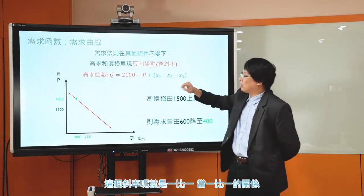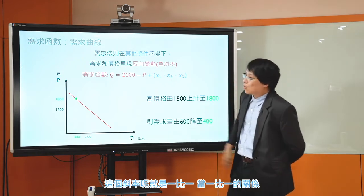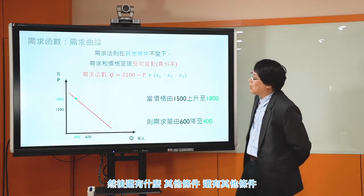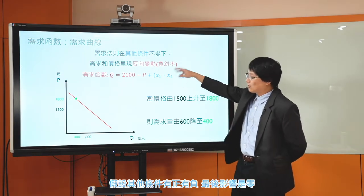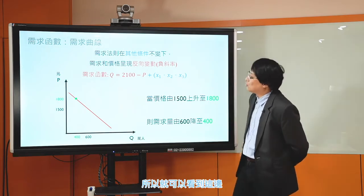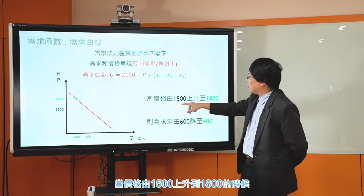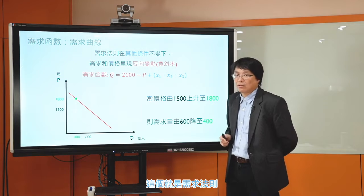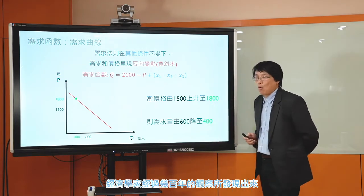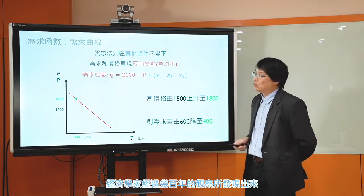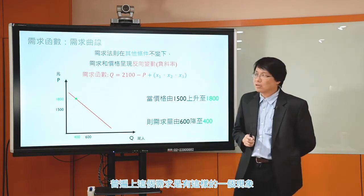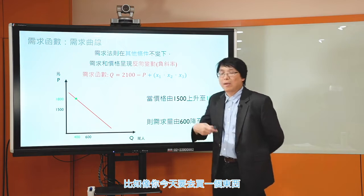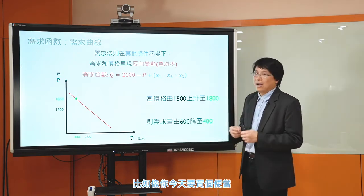所以這個反向變動關係就在說明當價格由P1上升到P2的時候，需求量會由Q1降到Q2。我們可以用一個比較簡單的數學式來表達需求函數，比如說我們把需求函數寫成Q等於2100減P。這個斜率就是負的1比1，是反向的變動關係。當價格由1500上升到1800的時候，需求量由600降到400，這個就是需求法則。